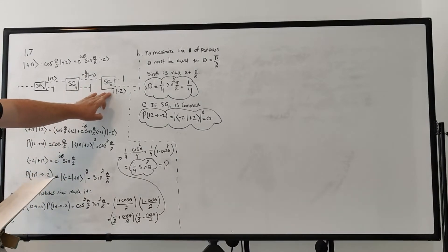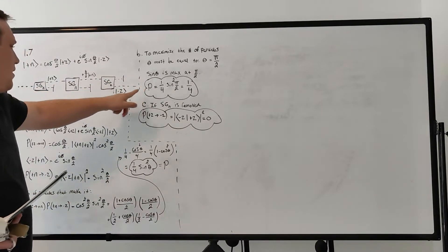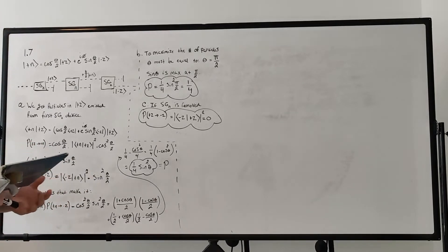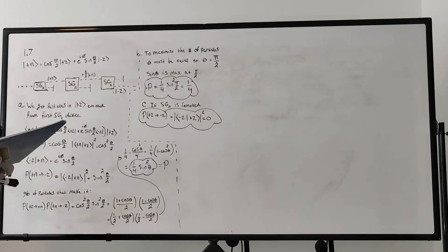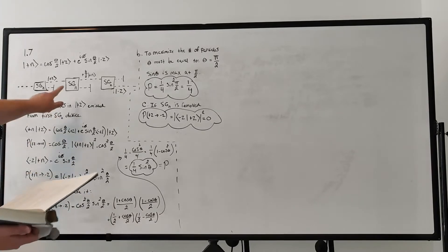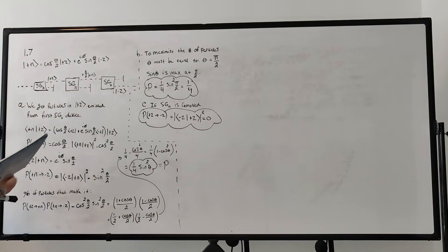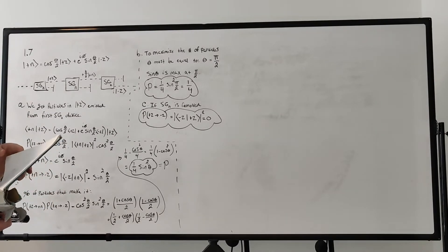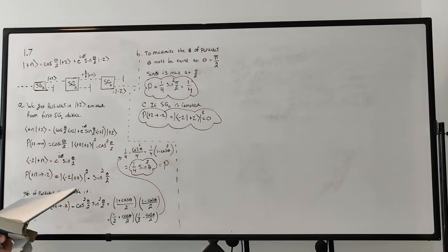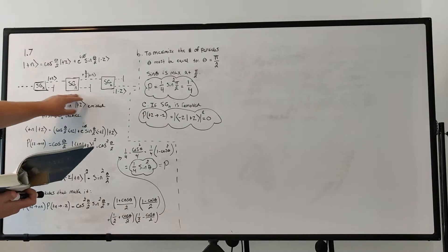The final device is a Z device again. It blocks particles coming out with the plus Z state and allows only particles in the minus Z state through. The questions are: Part A — what fraction of the particles transmitted by the first device will survive the third measurement? Part B — what must the angle theta be to maximize the number of particles transmitted in the final device, and what is that maximum fraction? Part C — what fraction of particles survive the last measurement if we remove the SGN device?